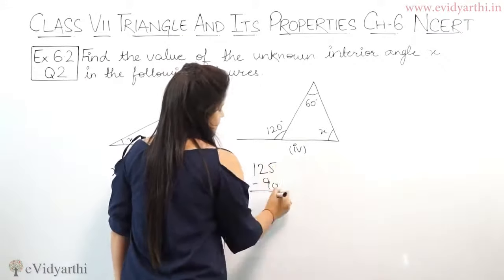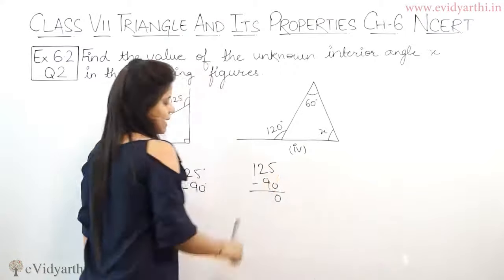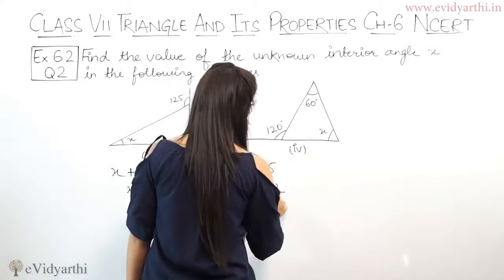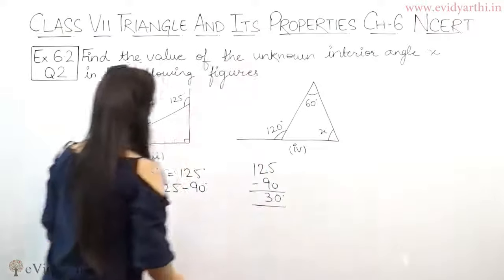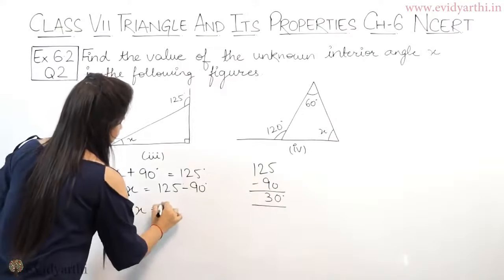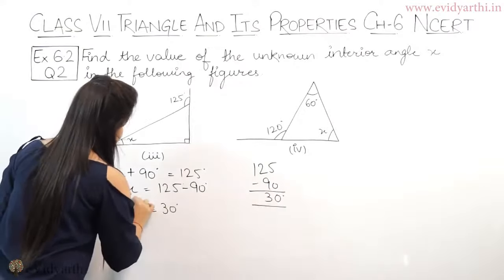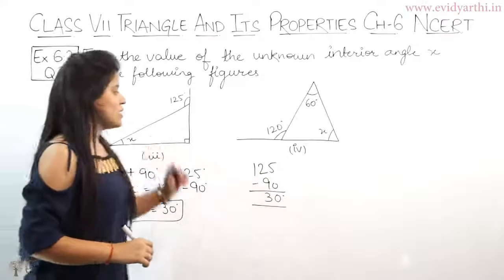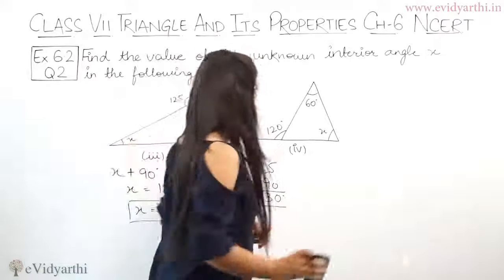So x will be 125 minus 90. Let's subtract: 5 minus 0 is 5, 12 minus 9 is 3. So this gives us 35 degrees. So x equals 35 degrees, and we needed to find x. Now let's go to the fourth part.